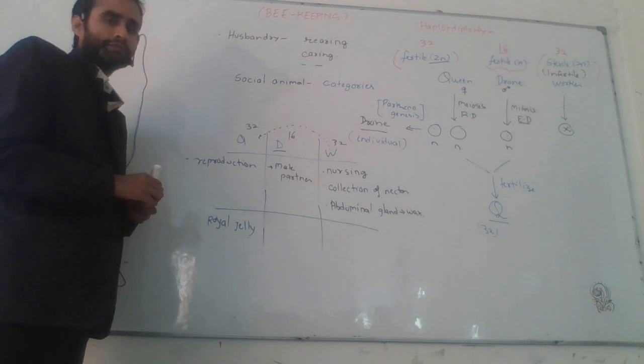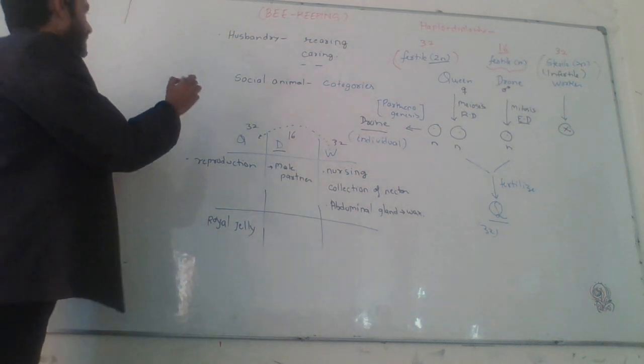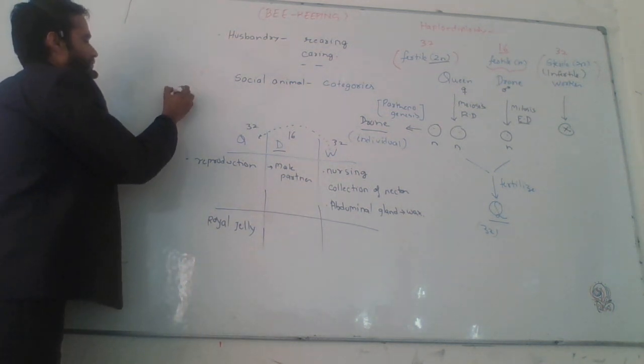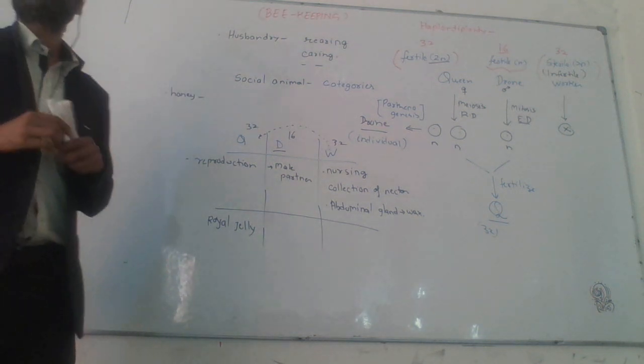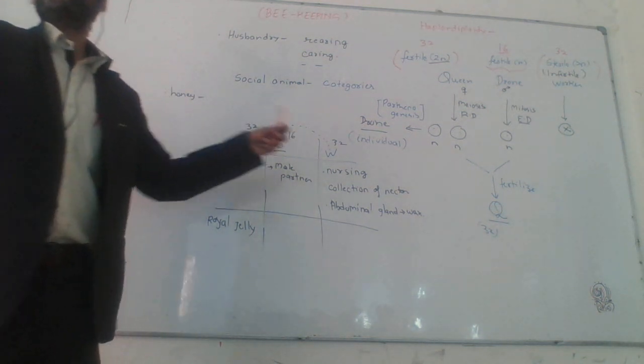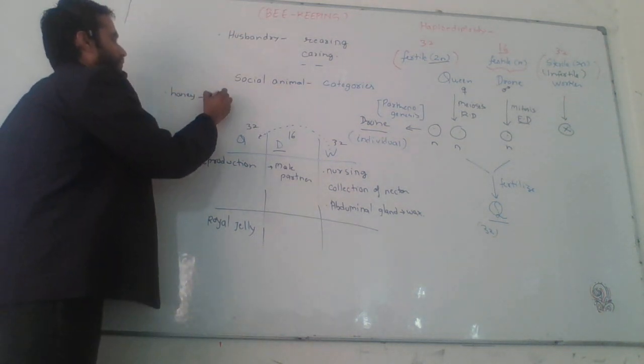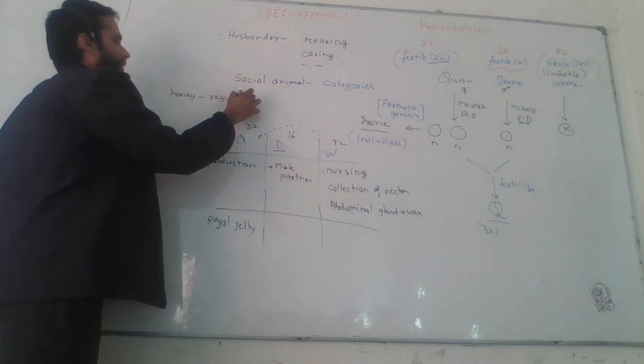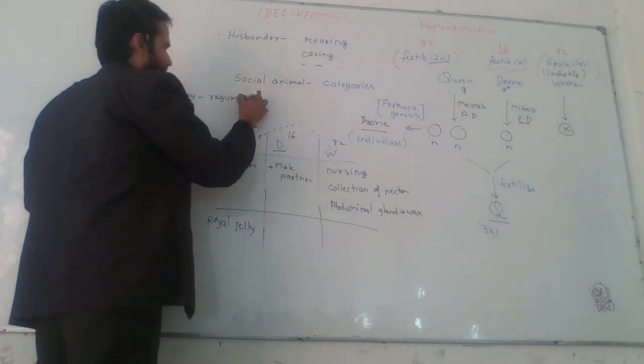Why the royal jelly? Next point is the production of honey. So honey is produced by the worker bee by vomiting or regurgitating.